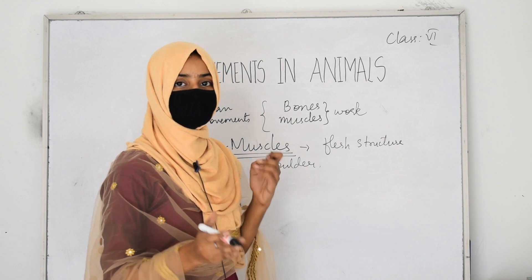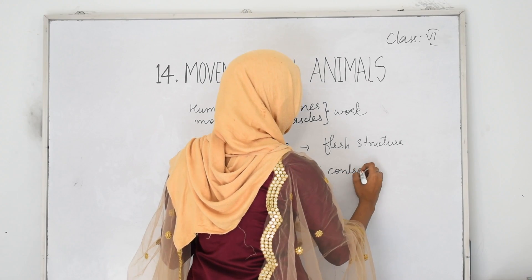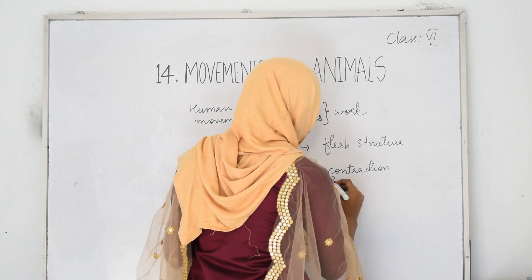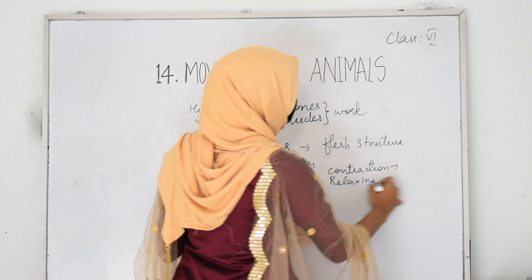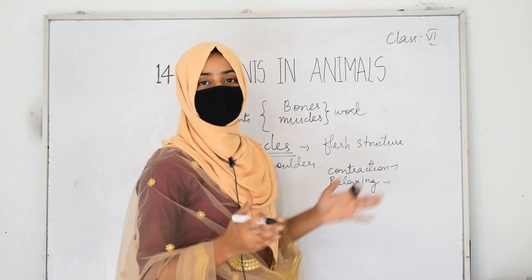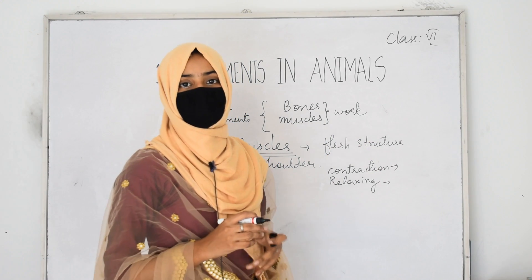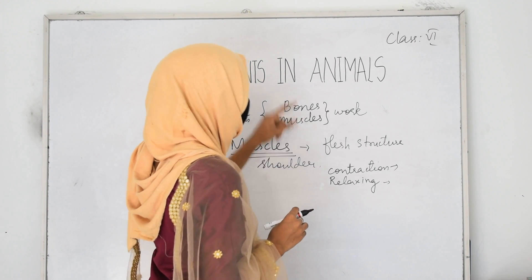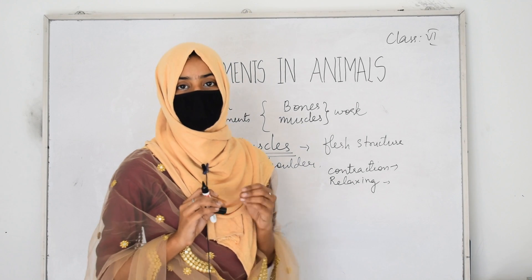Due to the contraction and relaxation of muscles, we can show different movements. All muscles work in pairs — when one muscle contracts, the other one relaxes. When the first muscle relaxes, the other one contracts. In this way, muscles work in pairs, showing contraction and relaxation, enabling movement of different body parts.